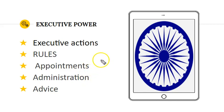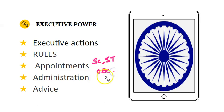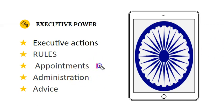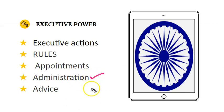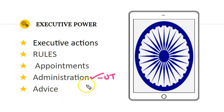Apart from the above, the President has the power to establish commissions to check the conditions of Scheduled Castes, Scheduled Tribes, and other backward communities. He receives reports from these commissions, which are laid before Parliament on his behalf. The President also has the power to appoint the Inter-State Council to promote relations between the Centre and State. He directly administers the Union Territories with the help of administrators appointed by him, and he is able to declare an area as a scheduled area for tribes in their interests.